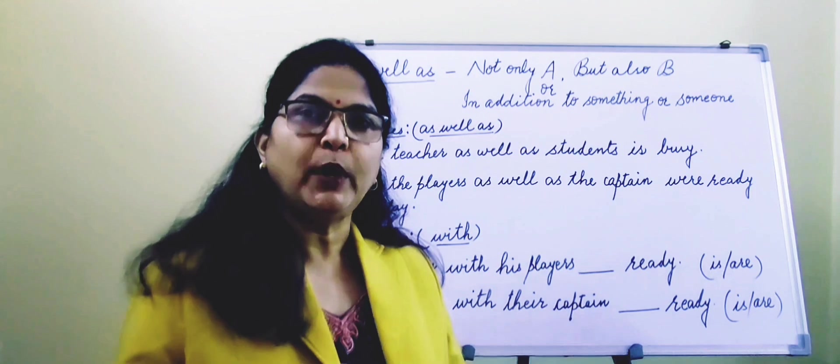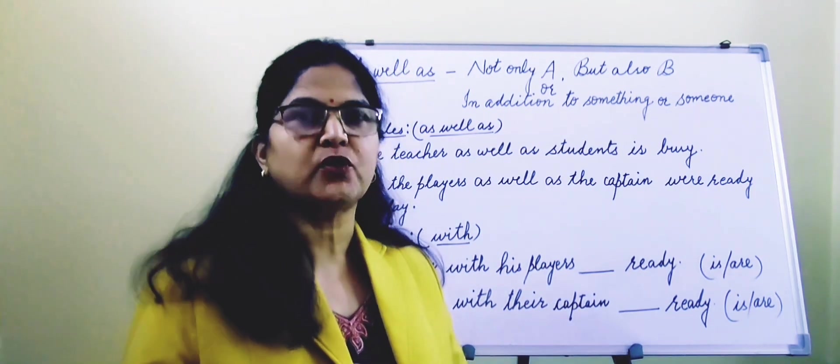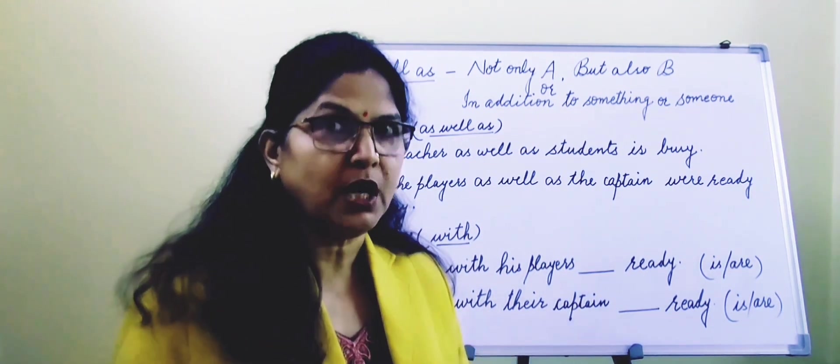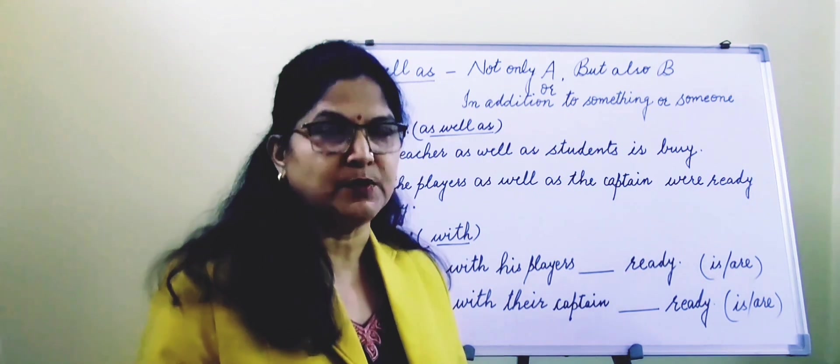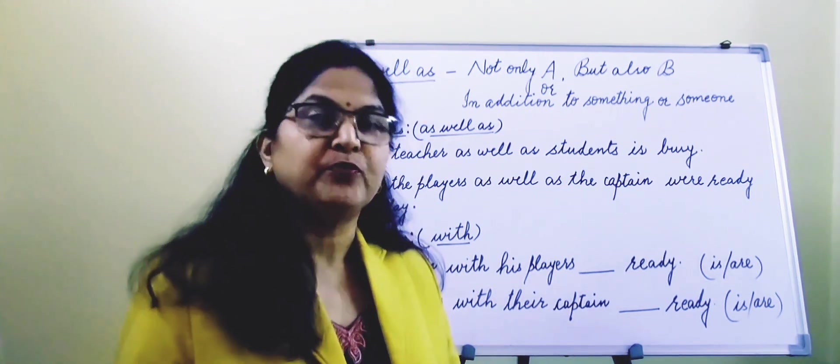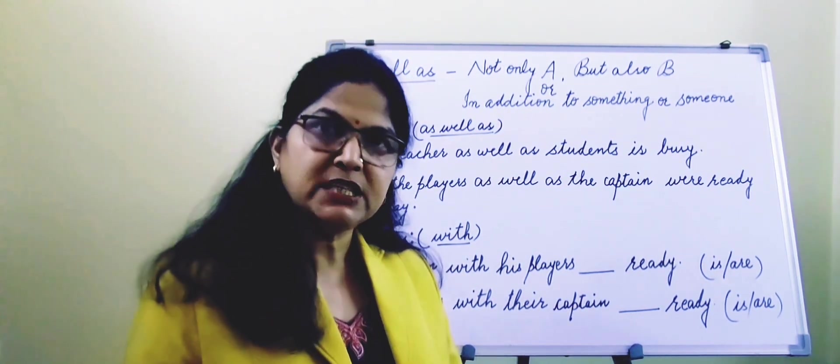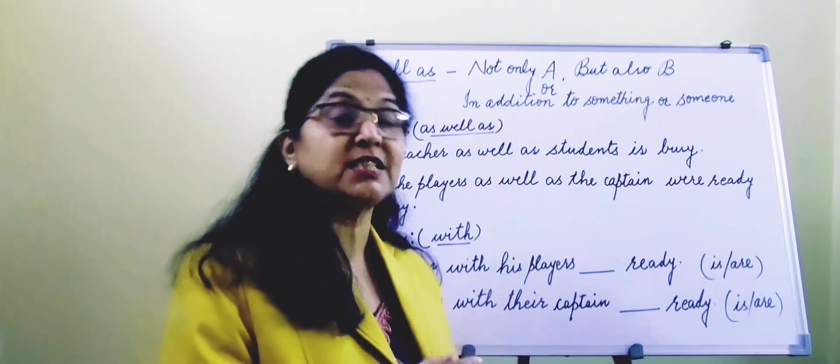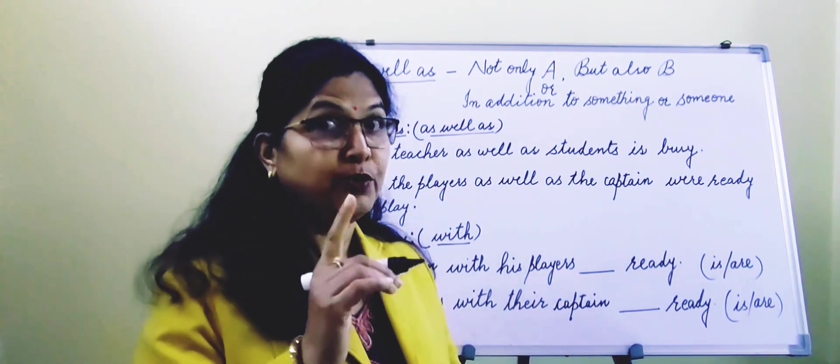The rule says when the subject consists of two nouns or pronouns joined by as well as or with, then the verb agrees with its first subject.